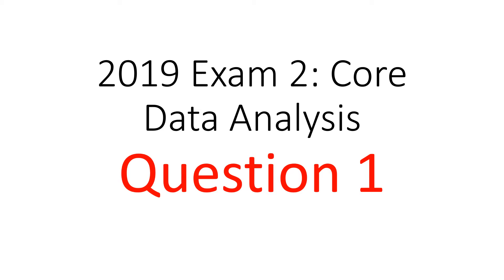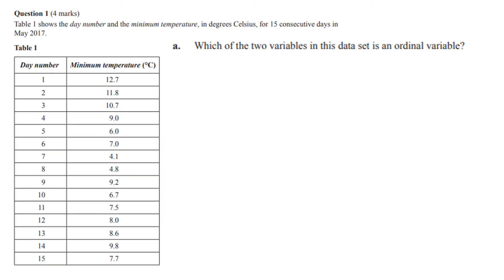2019 exam 2 data analysis question one asks which of these two variables, day number and minimum temperature, is the ordinal one. Well, something you can put in order. Those numbers can be put in order, so the answer was day number. To remind ourselves: you've got ordinal data, stuff you can put in order; nominal data, which is just wordy stuff that you can't put in order; postcodes are nominal, that was a trick on a previous exam; and then you've got discrete things you can count.